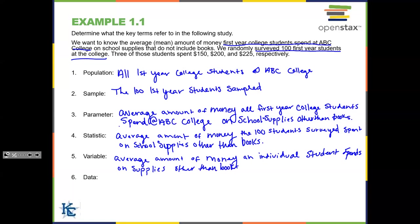The data is any information — numerical or categorical — that can actually be used. In this problem, where it says three of those students spent specific dollar amounts, those are the actual data values: $150, $200, and $225.